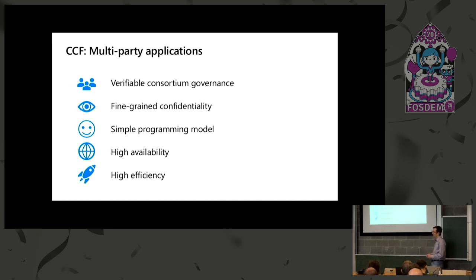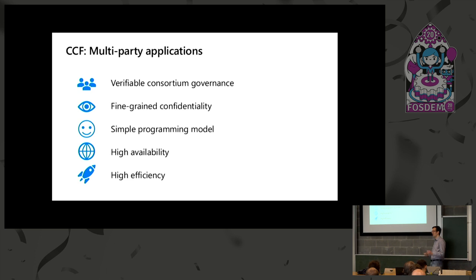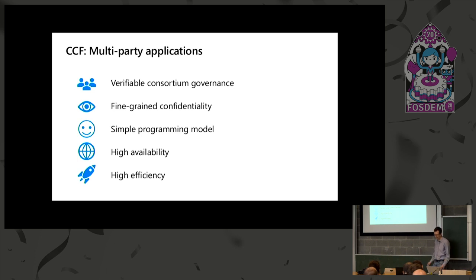One of the things that's often a problem is the lack of a governance mechanism. We want you to have a verifiable consortium governance mechanism — a system with well-defined governance rules for the multi-party application, easily verifiable to all participants, to members themselves, and to users so they can see the application is run in the way it was promised. We also want fine-grained confidentiality, a very simple programming model, and high availability and high efficiency.